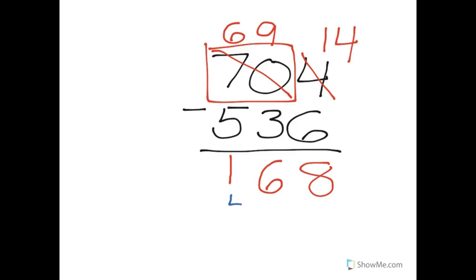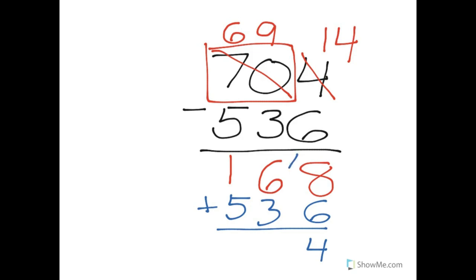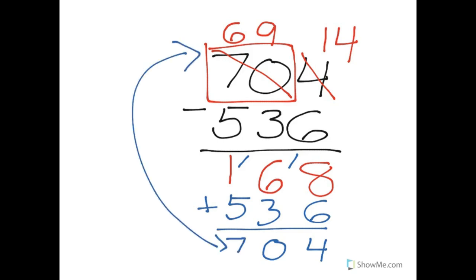Let's check our work. We're going to add the 536 back in. Eight plus six is 14 — put down the four, carry the one. One plus six is seven, seven plus three is ten — put down zero, carry the one. One plus one is two, and two plus five is seven. Let's compare — do we have what we started with? Yes, we did, so bring on the smiley.